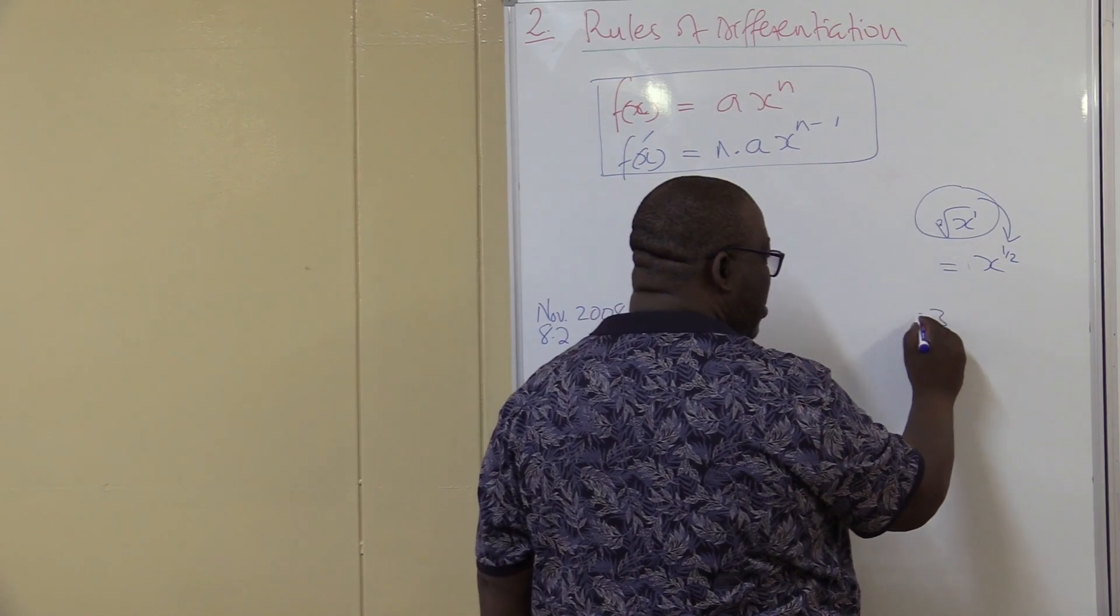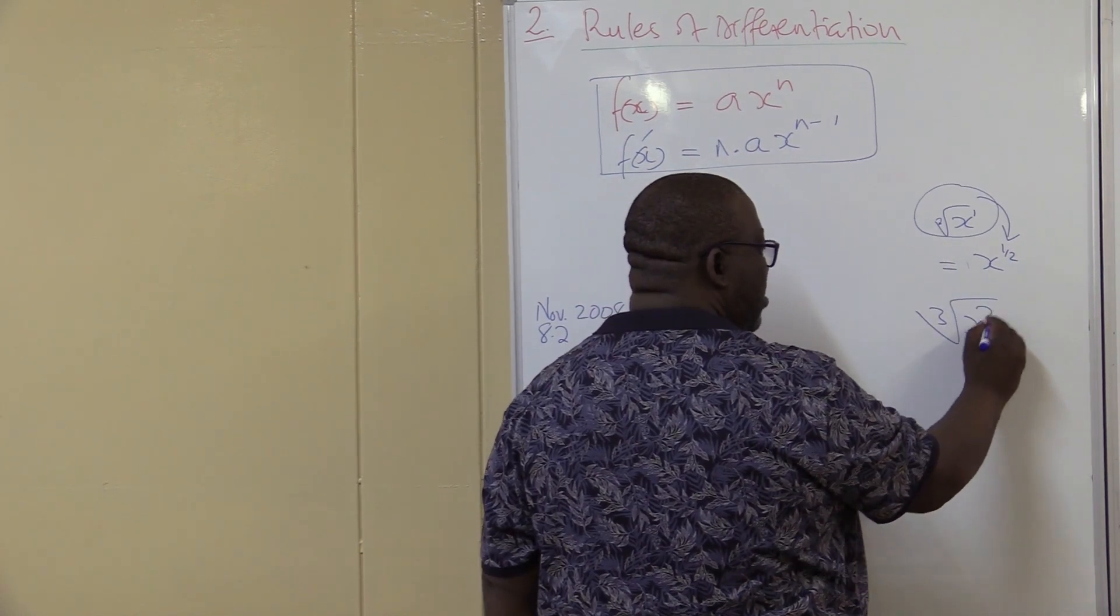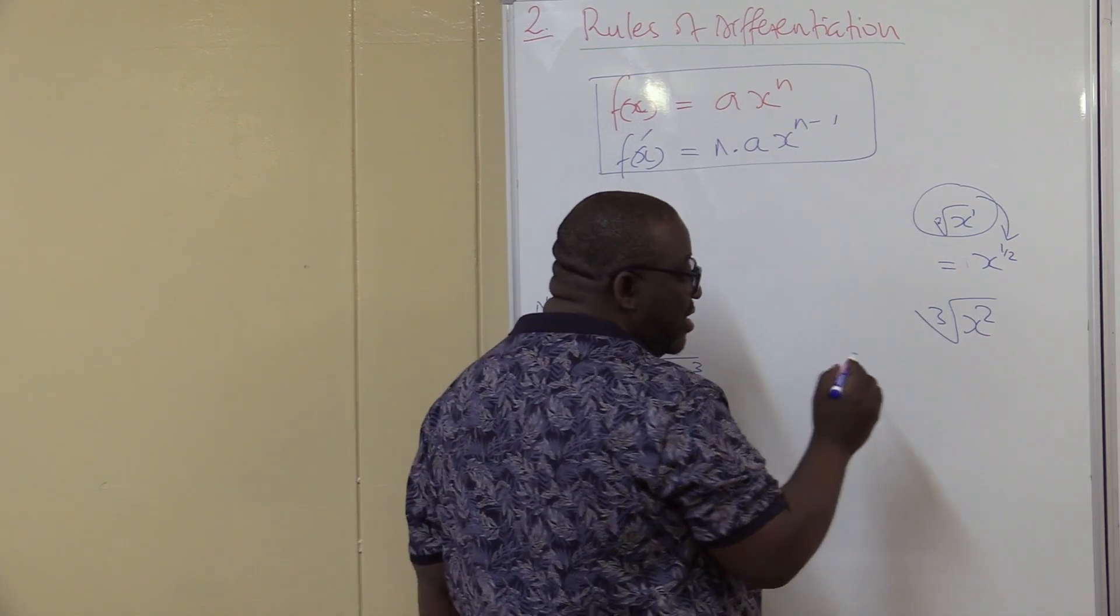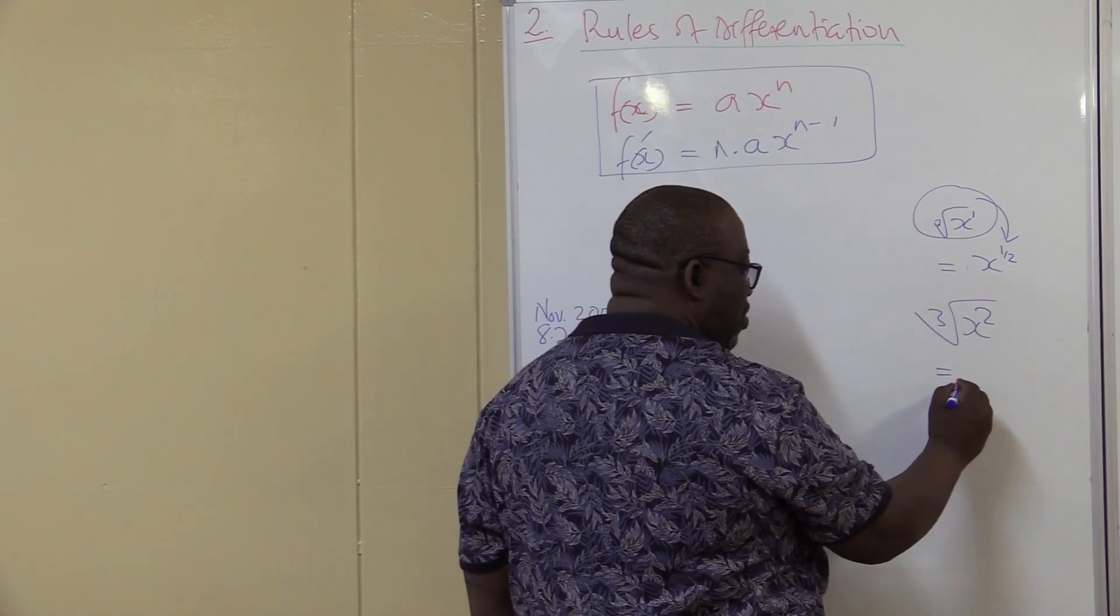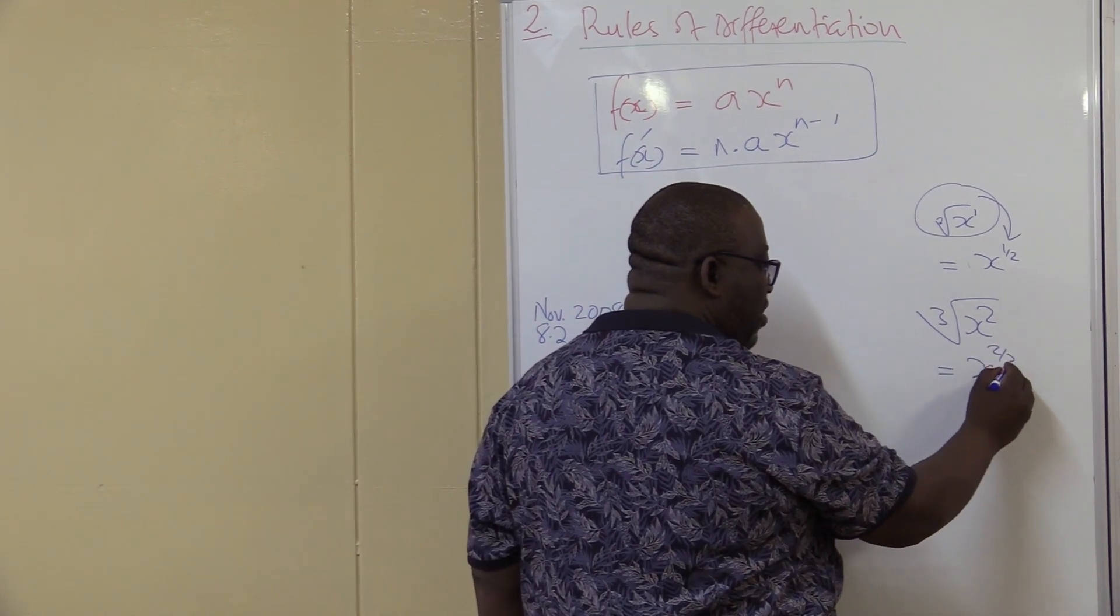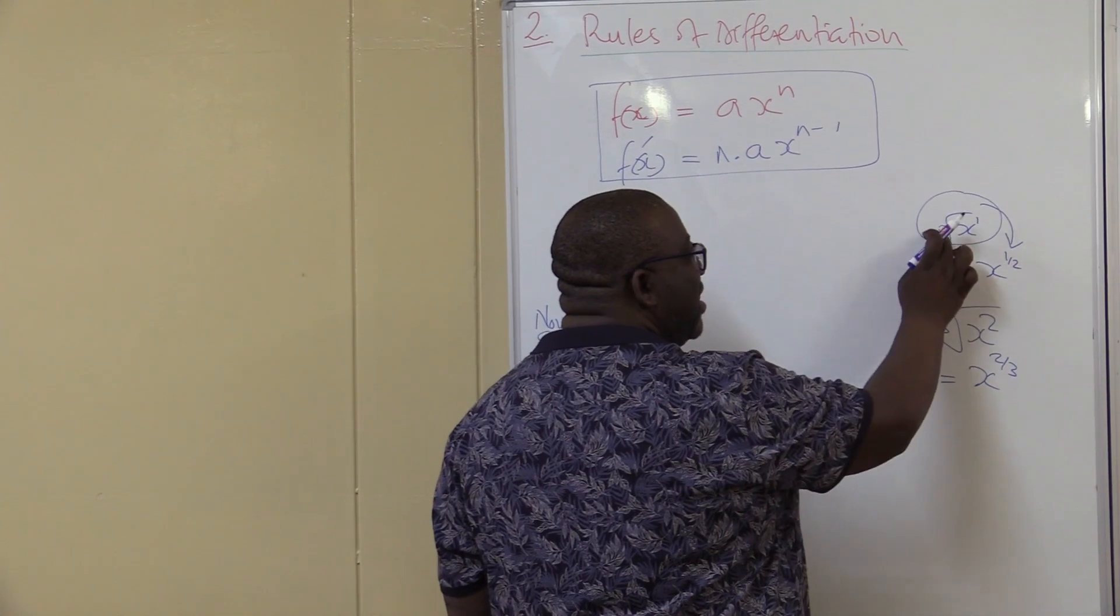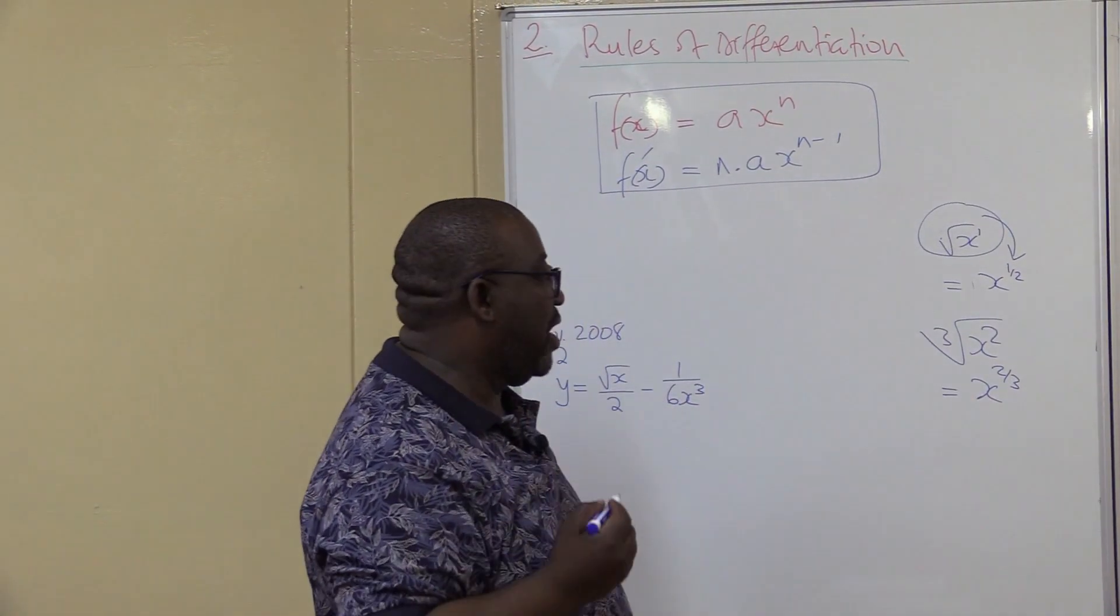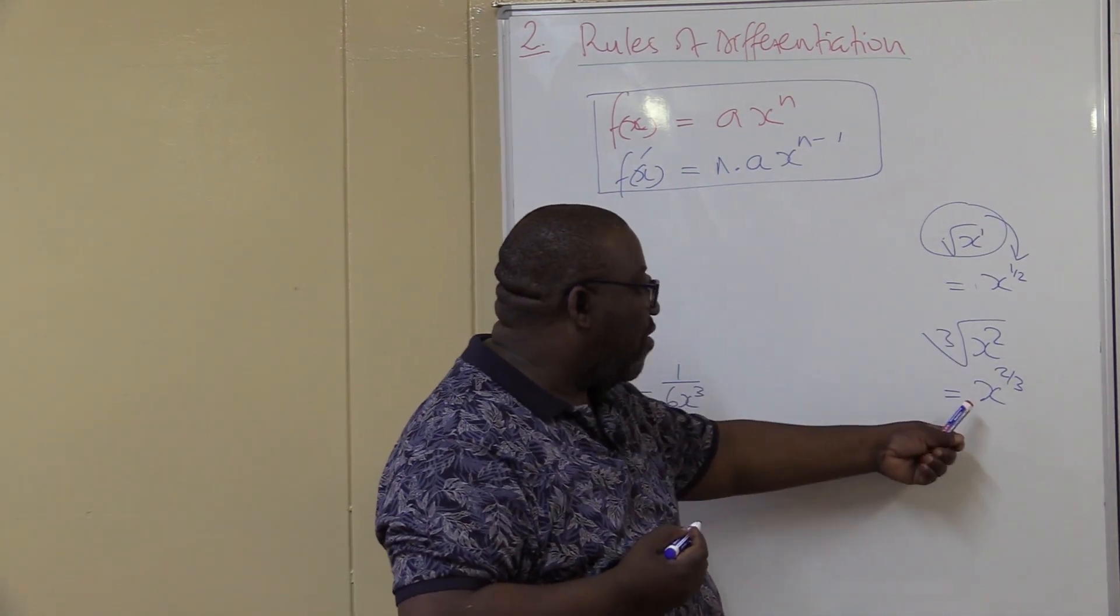Even if I've got cube root of x squared, how do I change this into that form? Remember the rule says you take this, you divide it with there. So this would be x to the power 2 over 3, whatever value that we have here. If there is nothing there, you must know that there is 2, square root, there is 2 there. So that's how I will change this into that form.